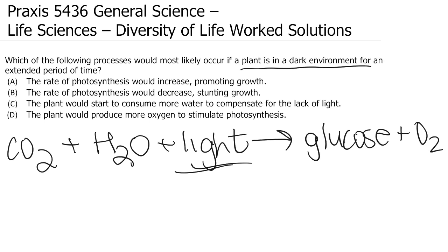A says the rate of photosynthesis would increase, promoting growth. We know that isn't true because the rate of photosynthesis would decrease. If the plant doesn't have what it needs — that being light — photosynthesis isn't going to happen, which is not going to allow the plant to make the sugars it needs to grow and develop. So A is not correct. B, on the other hand, is the correct answer: the rate of photosynthesis would decrease, stunting growth. When a plant doesn't have what it needs for photosynthesis, the rate decreases and the plant cannot grow and develop.